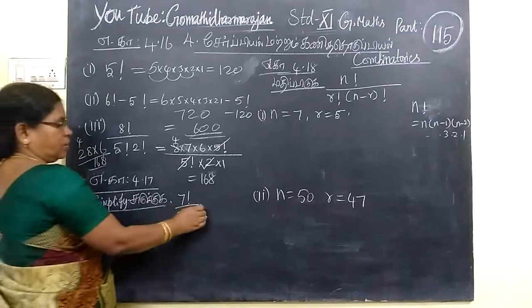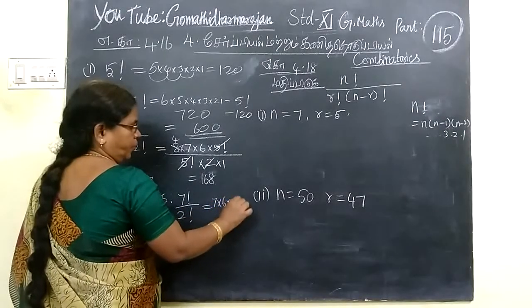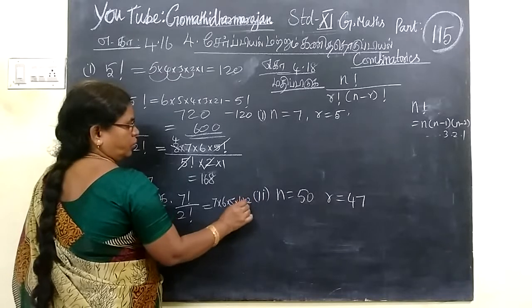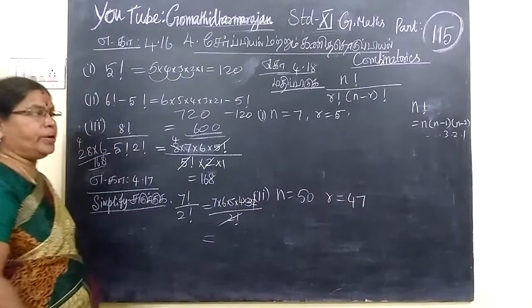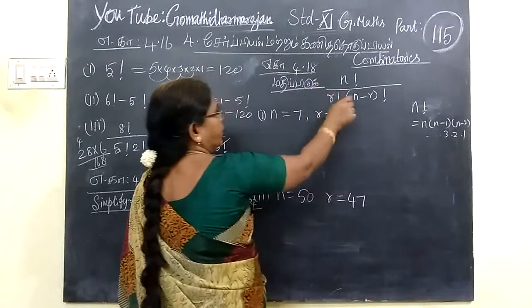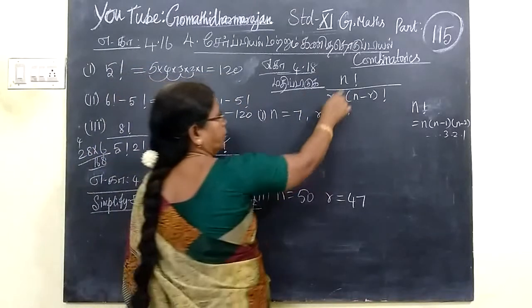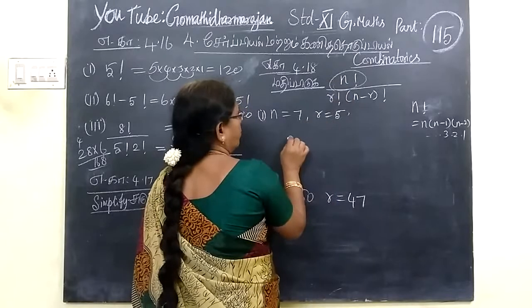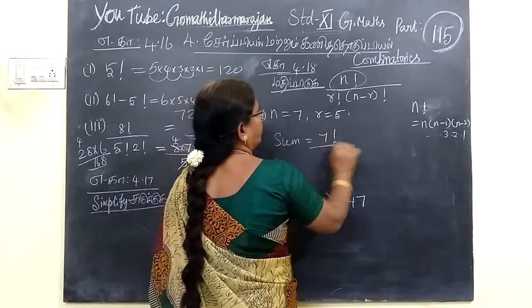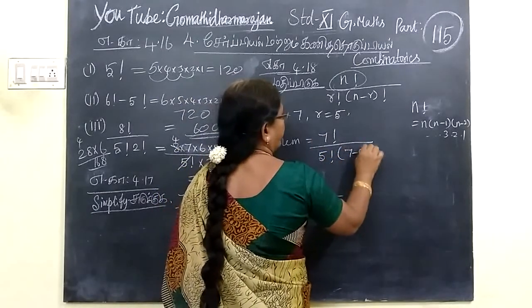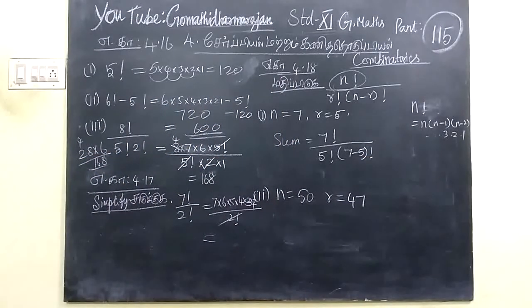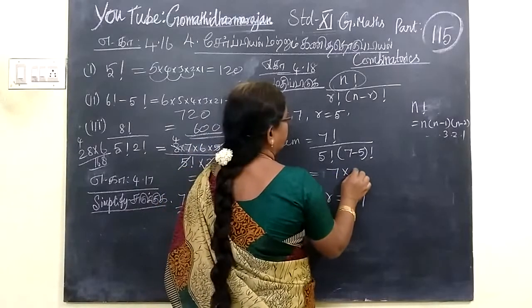Now, coming to the next one. 7 factorial: 7 times 6 times 5 times 4 times 3 times 2, but 3 times 2. Now, you can look at 2 factorial and apply here. You get 7 times 6.